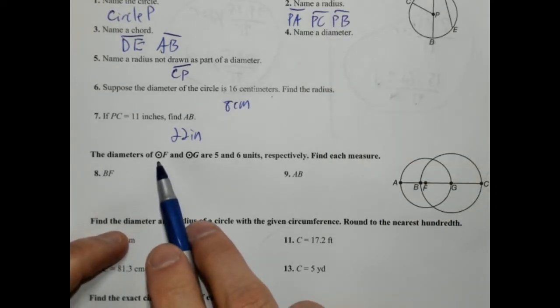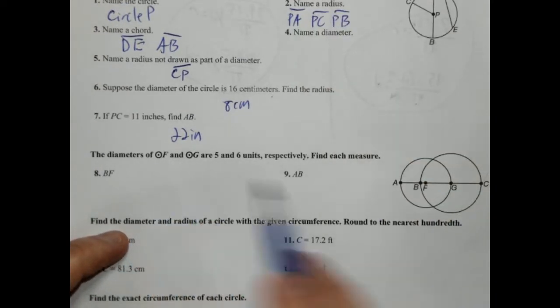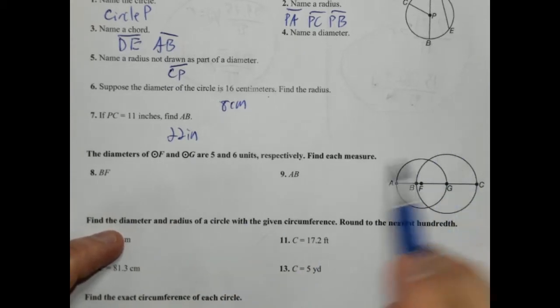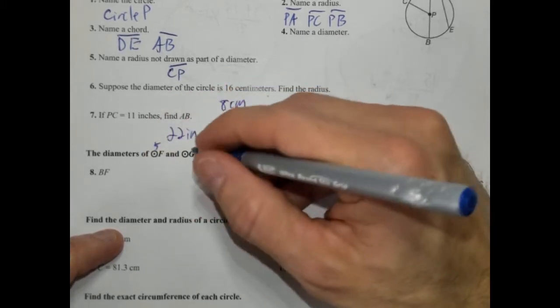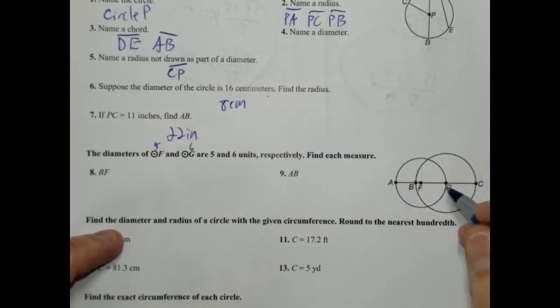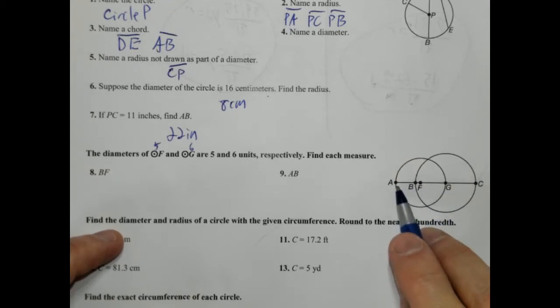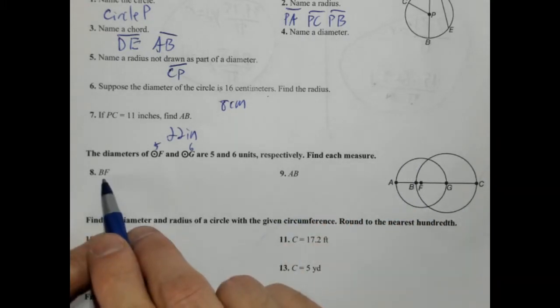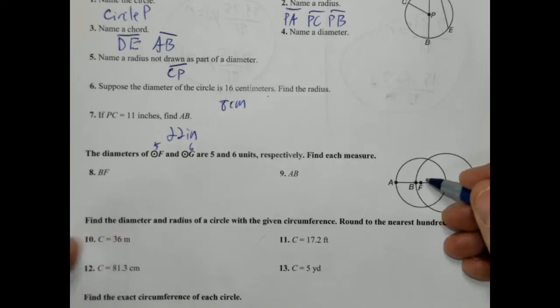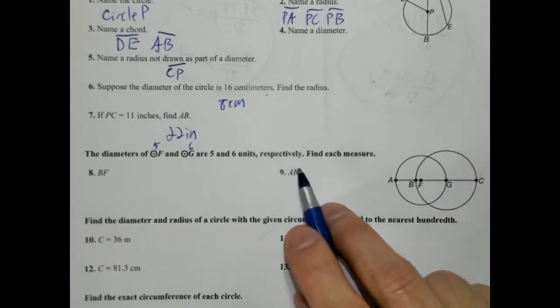The diameters, this is a symbol, by the way, for circle F and circle G. So diameters of circle F, which is this circle here, and circle G, this looks like a Venn diagram, are 5 and 6, respectively. So this is a 5 diameter, this is a 6 diameter. Okay. So in other words, from A to G is 5, and from B to C is 6. That's important to denote. Okay. Find each measure. We're looking for BF. It's that little difference there. Interesting. Huh. And AB.